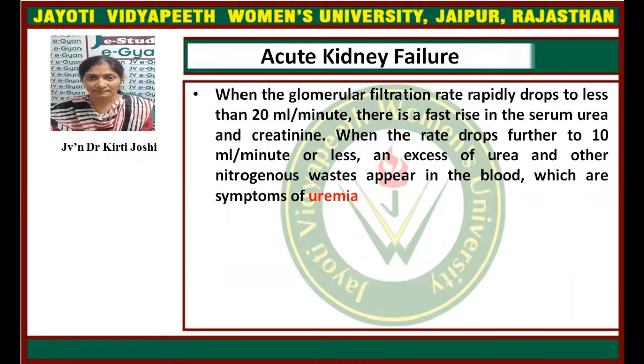When the glomerular filtration rate rapidly drops to less than 20 ml per minute, there is a fast rise in the serum urea and creatinine levels. When the rate drops further to 10 ml per minute or less, an excess of urea and other nitrogenous wastes appear in the blood, which is a symptom of uremia.